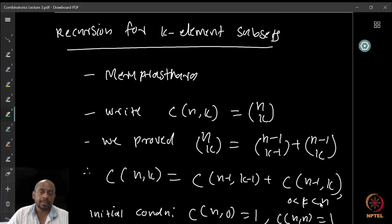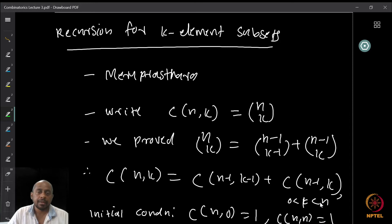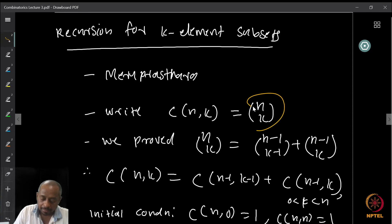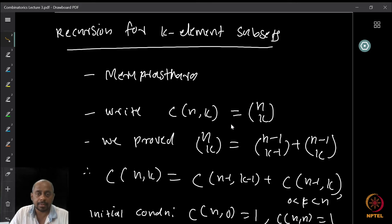Now let us look at a recursion for k-element subsets. We have already looked at k-element subsets, and this recursion relation is already occurring in Meru Prastara — Pascal's triangle. The k-element subsets of an n-element set is denoted by C(n,k), which is precisely n choose k.